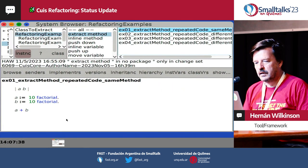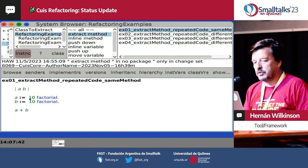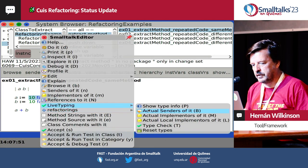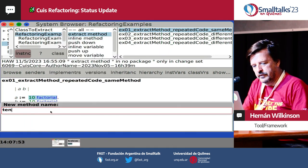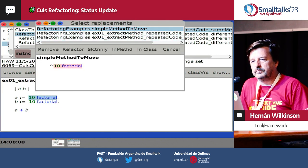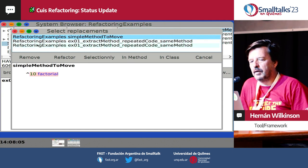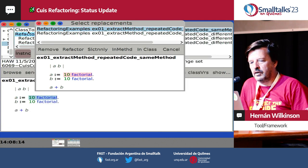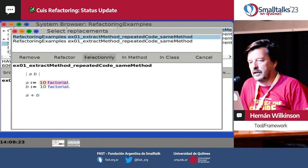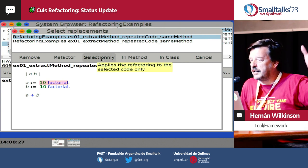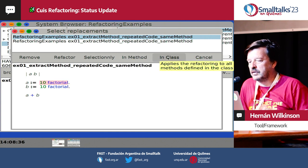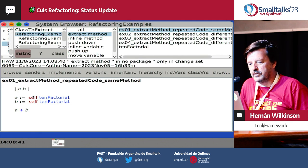I'll start with the extract method. In quiz now, if you select some code that is repeated, and you go to 'Refactoring: Extract Method', it will ask you for the name of the new message. It recognizes repeated code. So it allows you to say: I want to refactor. If you select refactor, it will remove all this and replace it with a new message send. You can say I want to replace only the selection in the browser, only the repeated code in this method, or all the methods in the class. I'm going to do a refactor and it's going to change those two places.